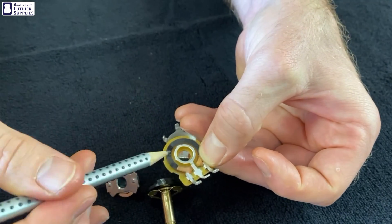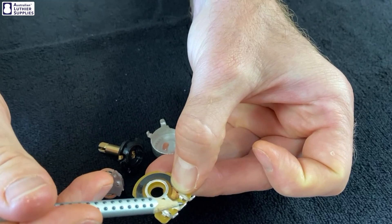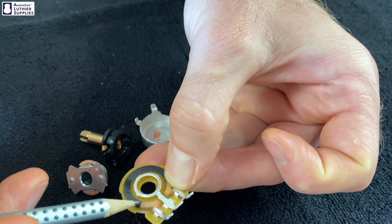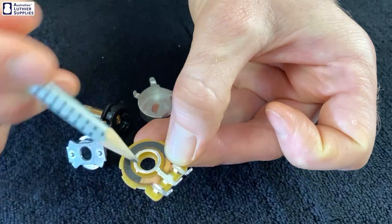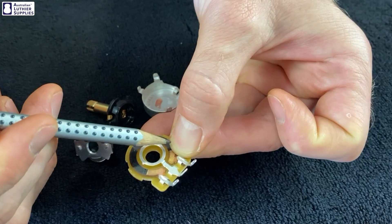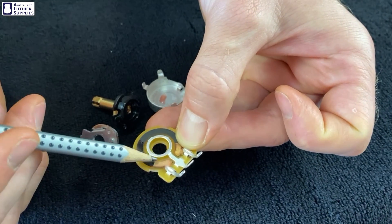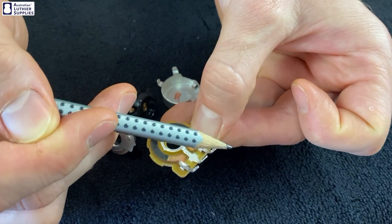If that wiper is closer to this end, more signal can travel from this lug into the metal, across, and then out of that outer lug. Less will get out of the other lug because it has to travel through all of this carbon, which is a resistor. It has all that resistance before it gets out of this end, so it'll have less signal getting out of that end.